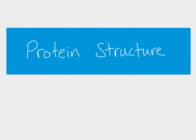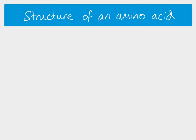This video is looking at the structure of proteins. A protein is a polymer, which means it's made of lots of repeating units which are the same type of molecules. Amino acids are the monomers which make up the polymer of a protein. We can also say that proteins are a macromolecule because they're very big.